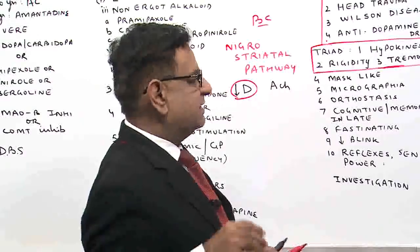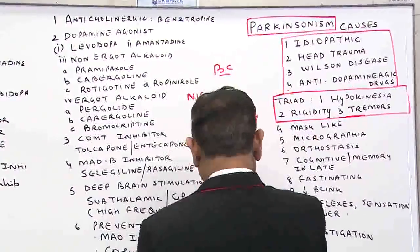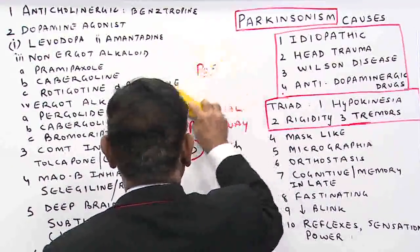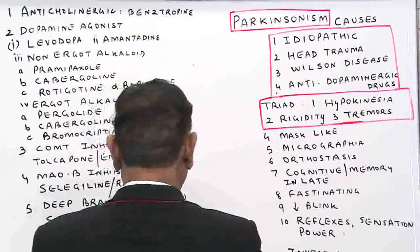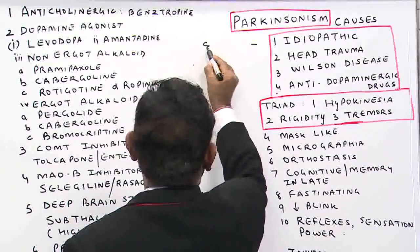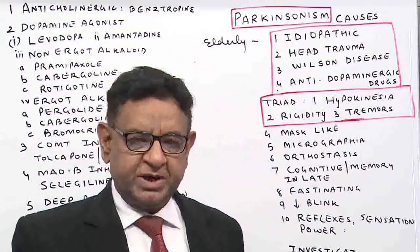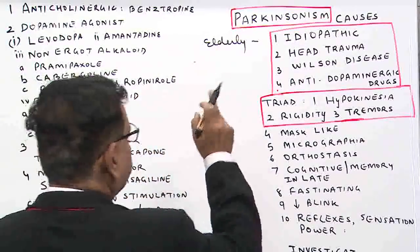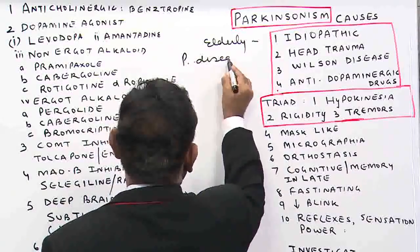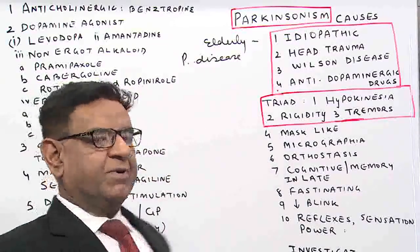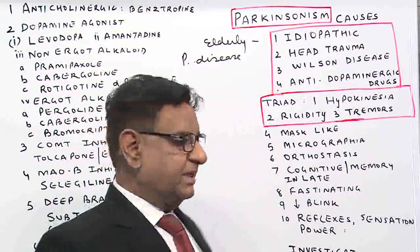Before we go to treatment, let us see what are the causes of Parkinsonism. The first is idiopathic. This typically occurs in the elderly person and since there is no known cause, we consider this a neurodegenerative disorder. This idiopathic variety is known as Parkinson disease. So Parkinson disease is a type of Parkinsonism, but all Parkinsonism is not Parkinson disease.